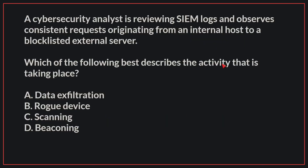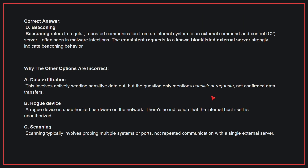A cybersecurity analyst is reviewing SIEM logs and observes consistent requests originating from an internal host to a blocklisted external server. Which of the following best describes the activity that has taken place? The correct answer is D: beaconing. Beaconing refers to regular, repeated communication from an internal system to an external command and control server, often seen in malware infections. The consistent requests to a known blocklisted external server strongly indicate beaconing behavior.